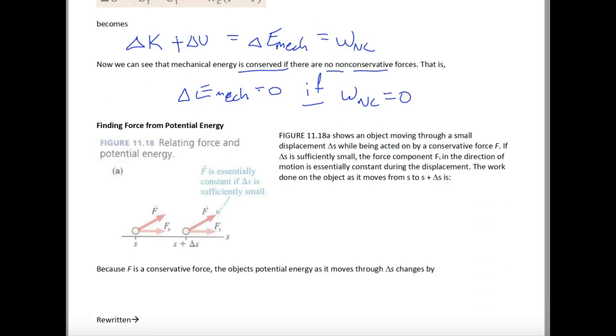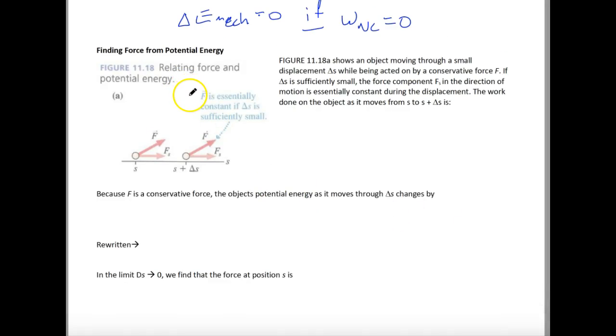If I want to find the force from potential energy, the way that I do it is to say the work done by that force as it's traveling to another position is that original position plus that change in position. That's equal to the force along that line times the change in our position. For F being a conservative force, the object's potential energy, as it moves through this delta S, changes by delta U, and that's equal to negative W, the work, as we move here along, and we go from S to S plus delta S, and that's equal to negative F S delta S.